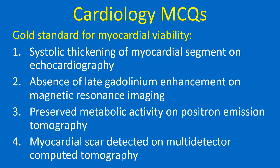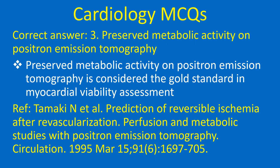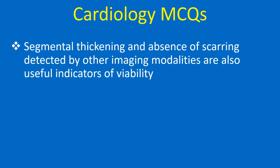Gold standard for myocardial viability: 1. Systolic thickening of myocardial segment on echocardiography, 2. Absence of late gadolinium enhancement on MRI, 3. Preserved metabolic activity on positron emission tomography (PET), 4. Myocardial scar detected on multi-detector CT. Correct answer: 3. Preserved metabolic activity on PET is considered the gold standard in myocardial viability assessment. Segmental thickening and absence of scarring detected by other imaging modalities are also useful indicators of viability.